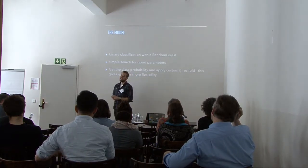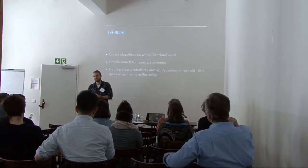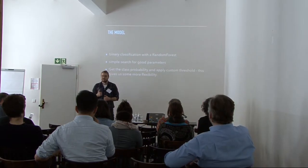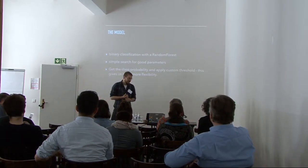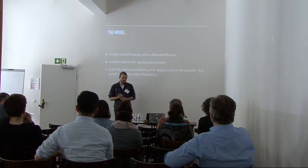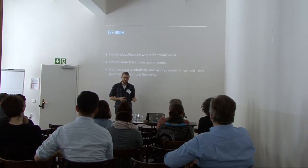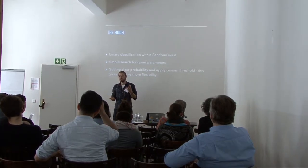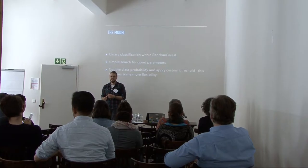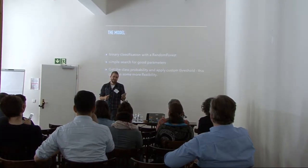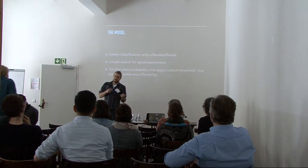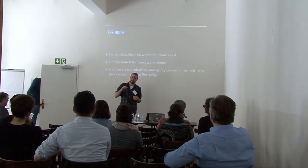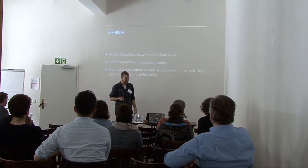Moving on to the model — it's a random forest. Random forests are really popular, easy to use and easy to understand. We use them for binary classification with the features I've shown. A random forest can give you a classification — in our case, a one or a zero — but it can also give you a probability. We use that probability to be able to adjust the threshold to the risk level that we are comfortable with.